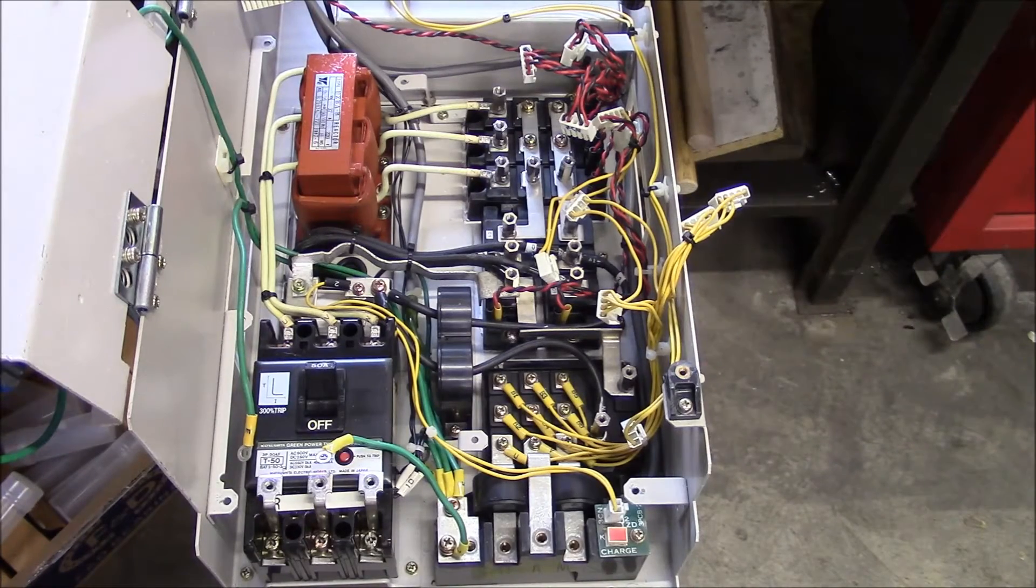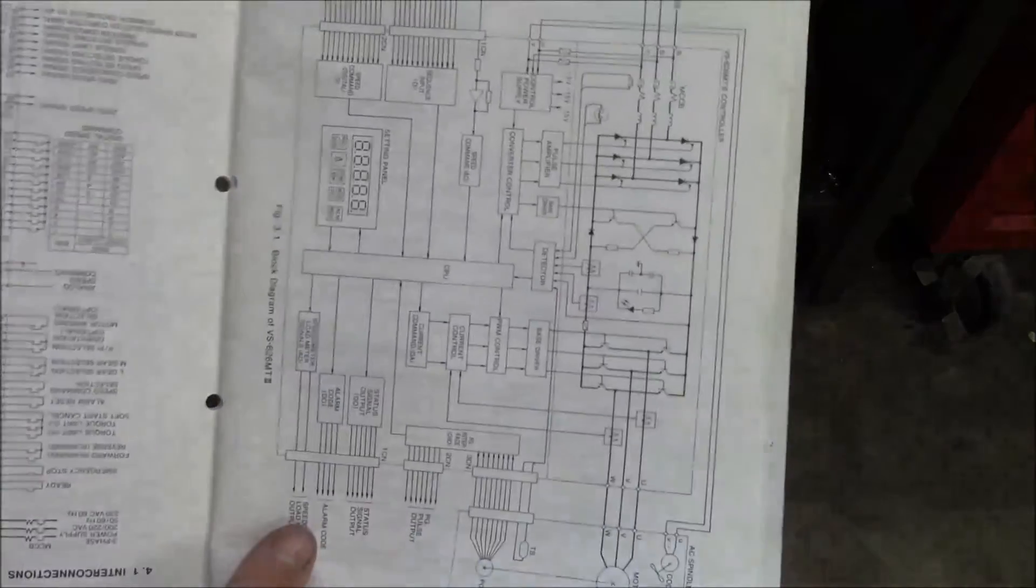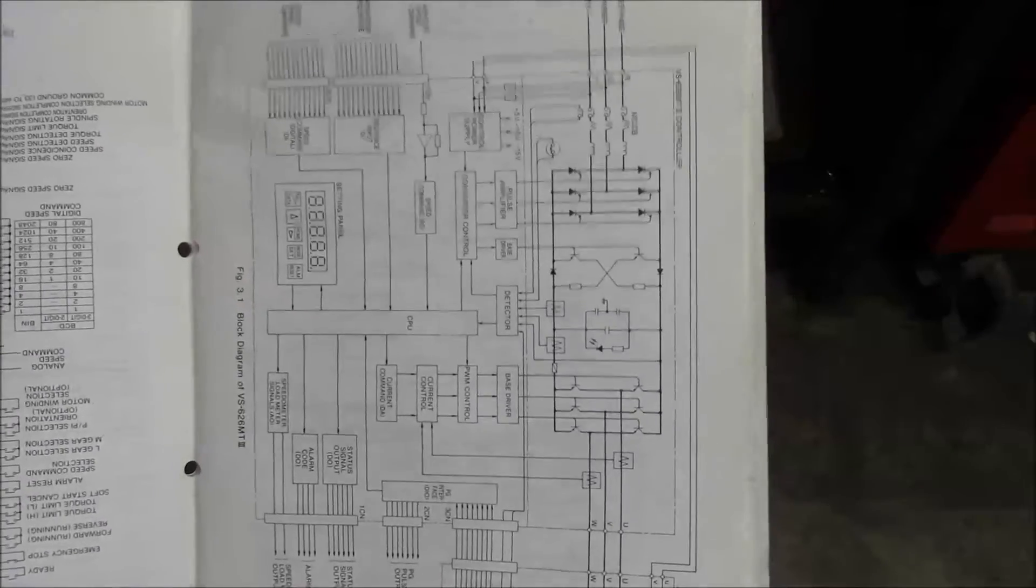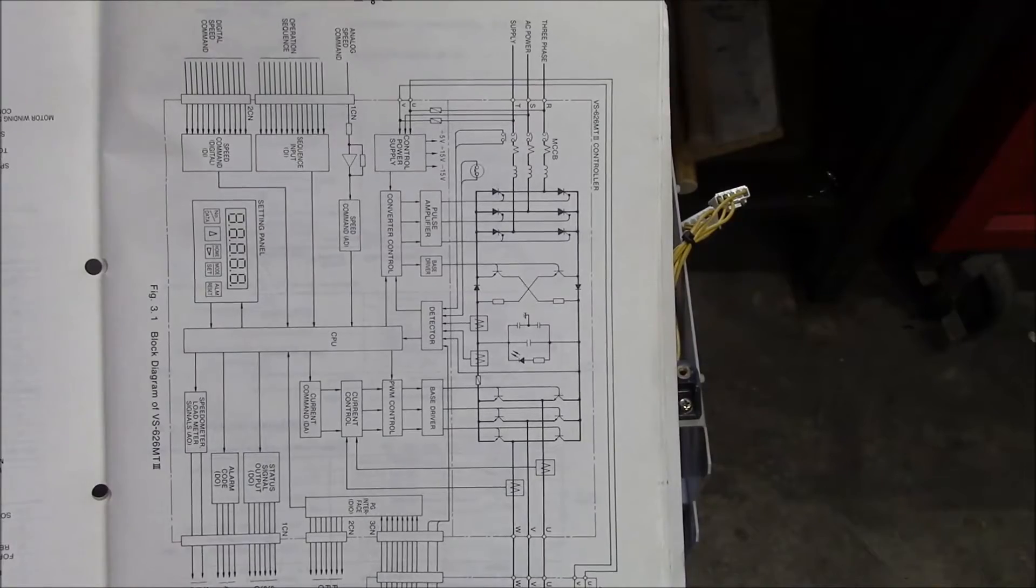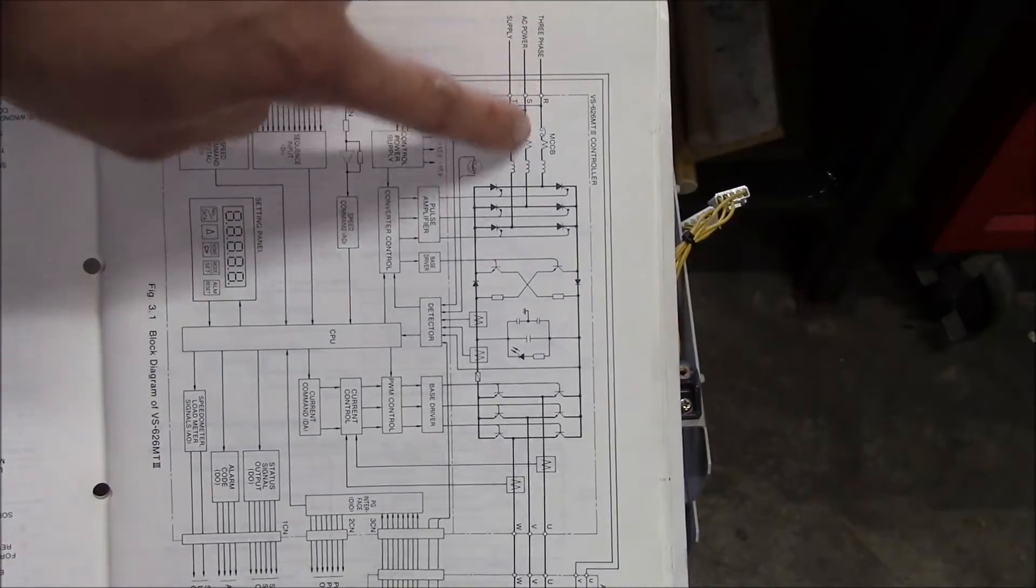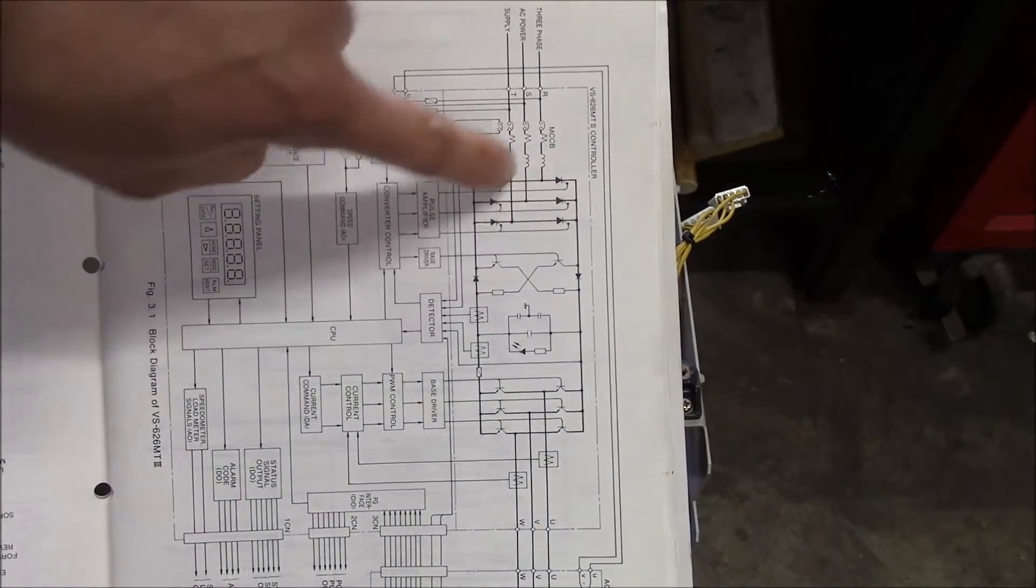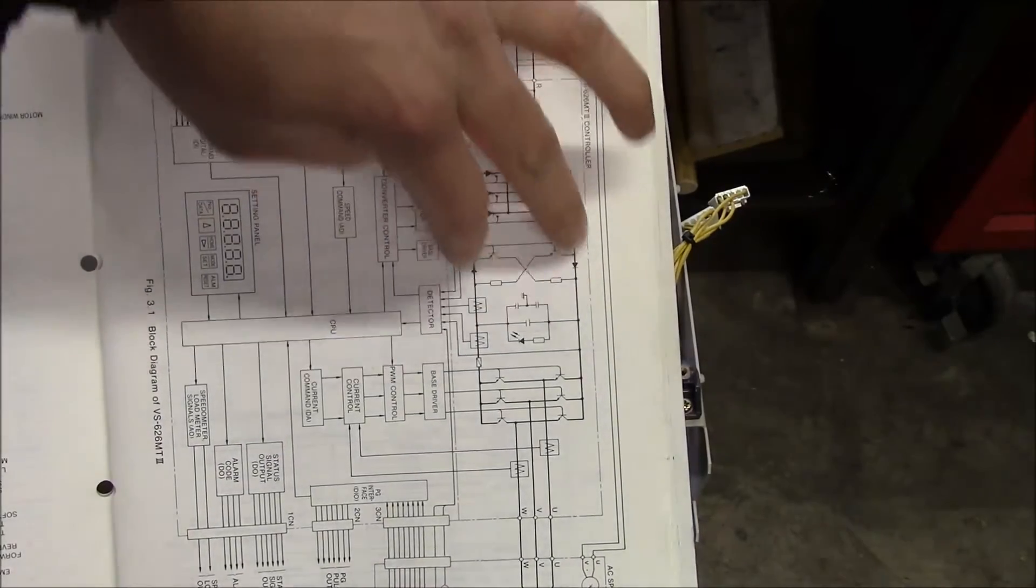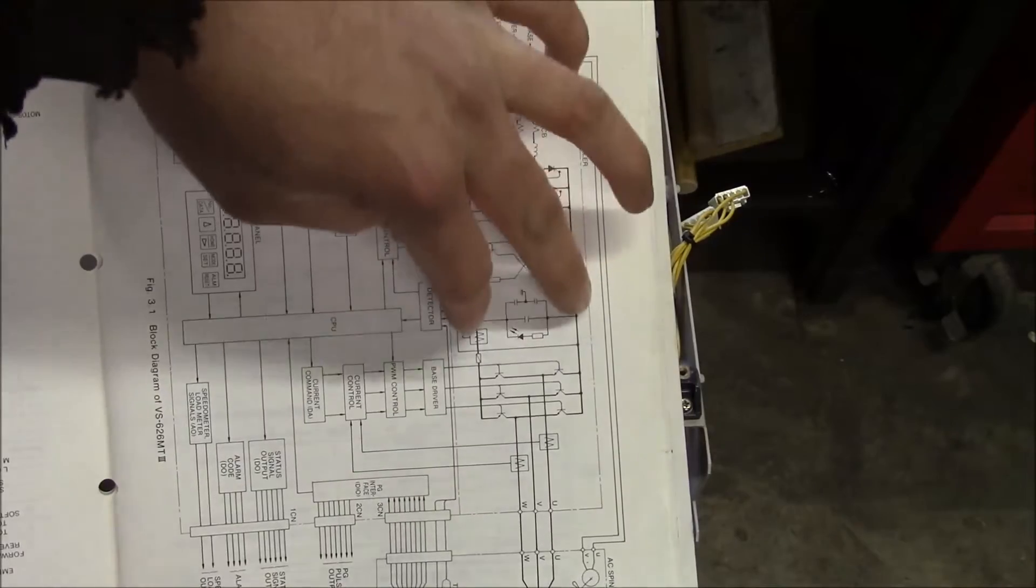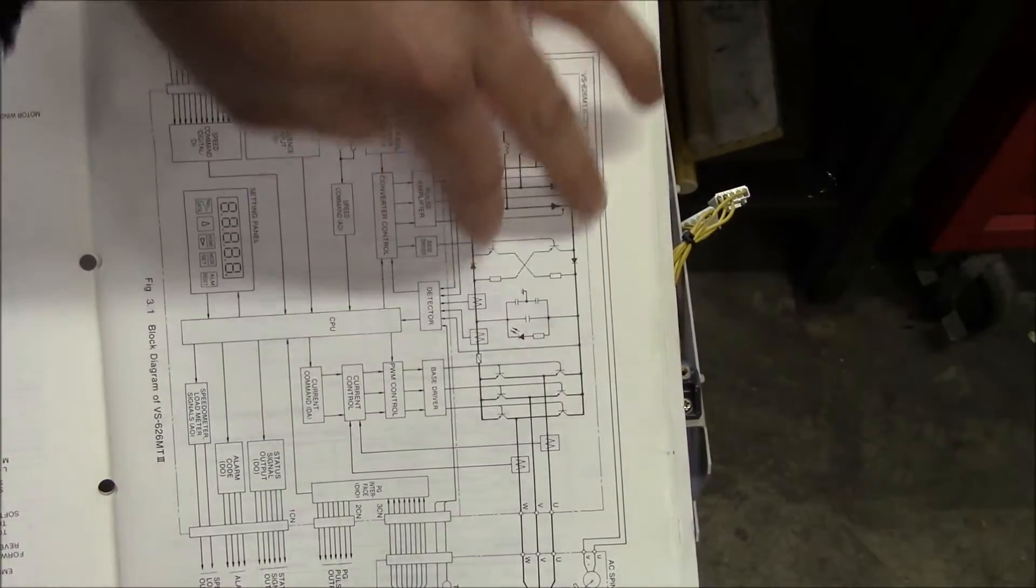So basically, I don't know if you'll be able to read this, but this is the schematic layout for this drive. So basically, three-phase power comes in, goes through a rectifier here, goes into this set of contacts here. That's the DC bus.